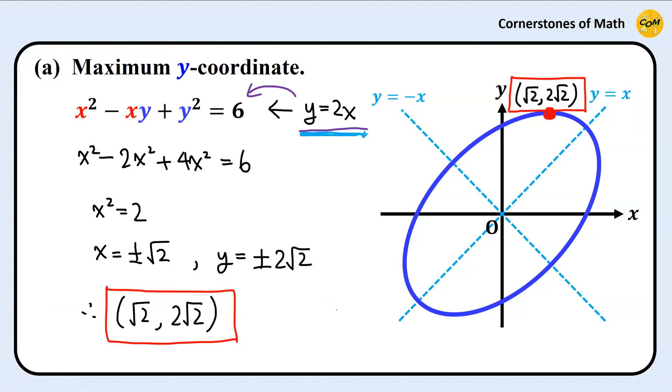And of course, the other solution, (minus square root of 2, minus 2 square root of 2), is the point opposite with minimum y-coordinate.